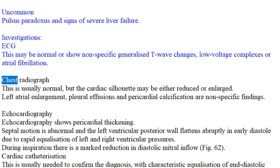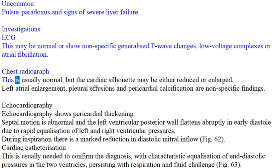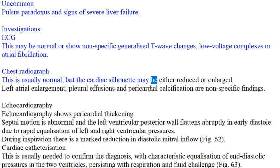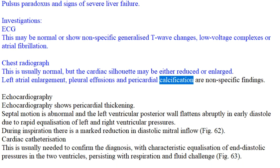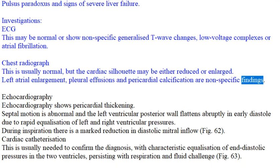Chest radiograph: This is usually normal, but the cardiac silhouette may be either reduced or enlarged. Left atrial enlargement, pleural effusions, and pericardial calcification are nonspecific findings.